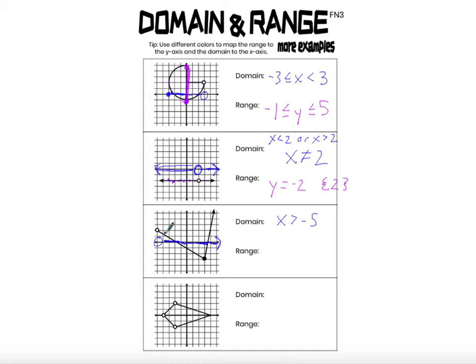Looking at the range — that's where this point comes in. There's one single point on this graph where the y-coordinate is negative 3, so negative 3 is the smallest possible y-coordinate. Going up, there are two points on the graph with a y-coordinate of negative 1, two points with a y-coordinate of 0, and this arrow goes up forever to positive infinity. So the range is y ≥ negative 3.